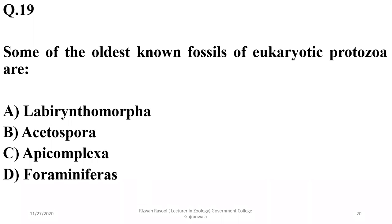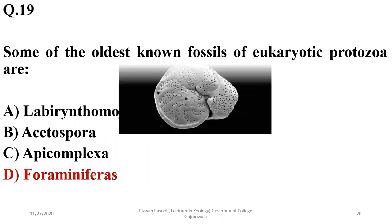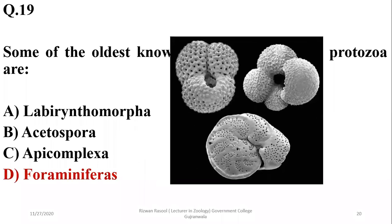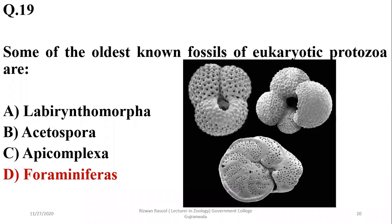Question nineteen: some of the oldest known fossils of eukaryotic protozoans are Foraminifera. Their shells have been found preserved in the oldest fossil records. The correct option is D.